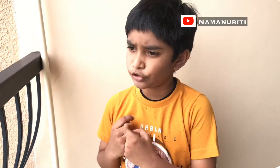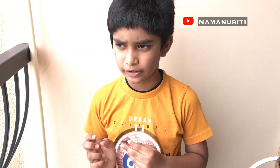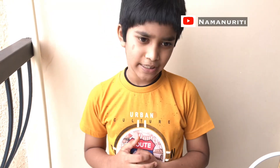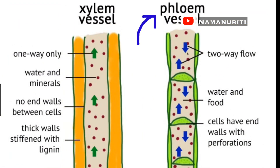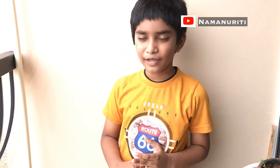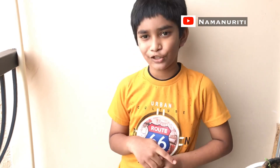Do you know the tissue which carries starch, which is made during photosynthesis, from the leaves to the other parts of the plant? Yes — it is phloem. Xylem and phloem are called the transporting tissues. Xylem carries water and nutrients while phloem carries the food.